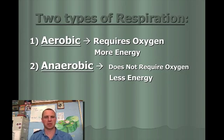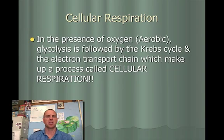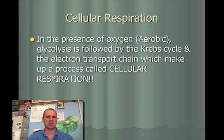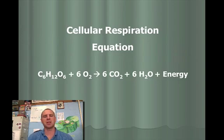Aerobic respiration is what we strive for — it gives us the most energy. Anaerobic is going to give you less energy; it's a little bit less effective and less efficient. So there are two types of respiration or two different pathways. First, we'll talk about the cellular respiration that occurs with oxygen present. I'm not concerned that you understand every detail of the Krebs cycle or electron transport chain — just realize there are a lot of complex steps, but here is our equation.